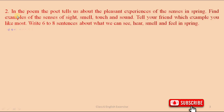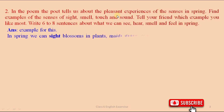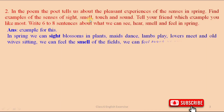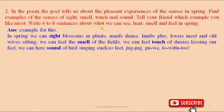In the poem, the poet tells us about the pleasant experiences of the senses in Spring. Find examples of the senses of sight, smell, touch and sound. We can see blossoms in plants, mates dance, lambs play, lovers meet, and old wives sitting. We can feel the smell of the fields. We can feel the touch of daisies kissing our feet. We can hear the sound of birds singing — cuckoo, jug jug, bui, tui tui tui.